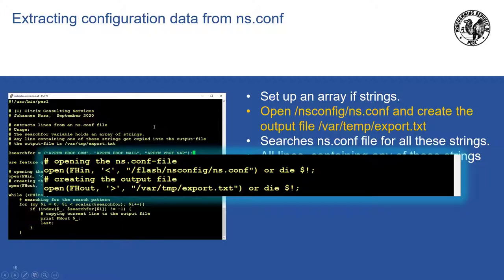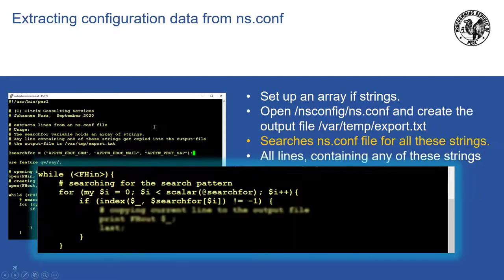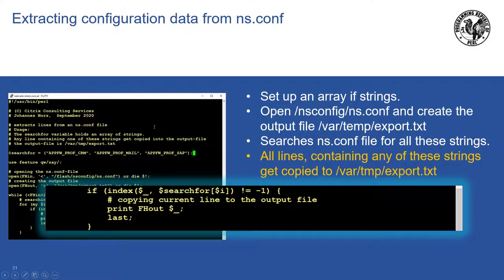I open the ns.conf file — it contains all the configuration of a Citrix ADC — and create the export.txt file, which will contain all the extracted configuration. The ns.conf file is read line by line using a while loop. I have a for loop to iterate through my array of searchfor strings. If a line contains any of my searchfor strings, I copy that line into my output file and leave the loop. Leaving the loop is important because a line could contain more than one of my keywords, which would result in duplicated entries in the output file, and duplicated entries would cause errors during import.